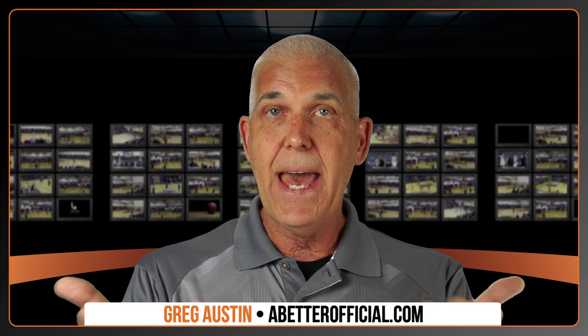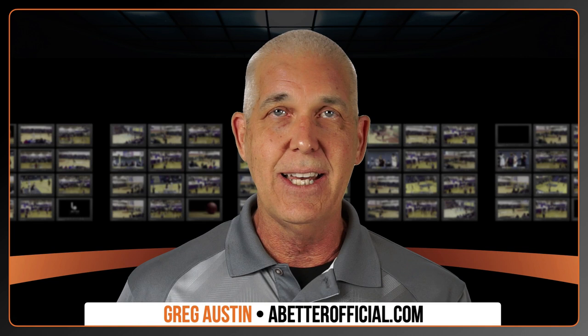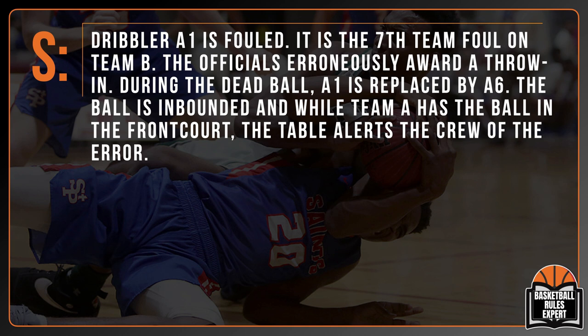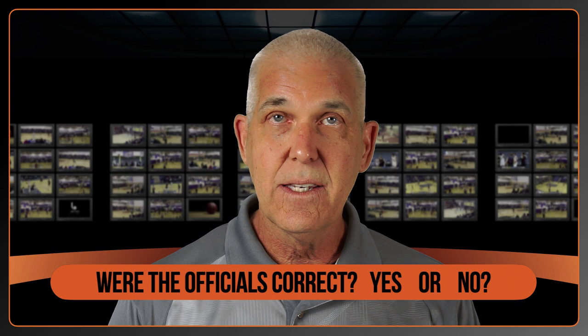Last week we covered correctable errors. This week our first play scenario finishes up on something we brought up in our coverage of correctable errors last week. Dribbler A1 is fouled. It is the seventh team foul on Team B. The officials erroneously award a throw-in. During the dead ball, A1 is replaced by A6. The ball is inbounded, and while Team A has the ball in the front court, the table alerts the crew of the error. The officials rule that free throws will be attempted by A1, who will re-enter the game replacing A6. Were the officials correct, yes or no?